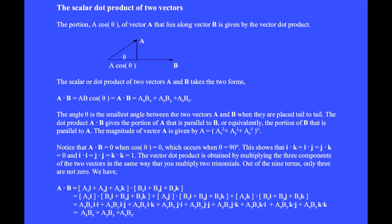The dot product can also be written as the product of the x components of A and B, plus the product of the y components of vectors A and B, plus the product of the z components of vectors A and B.